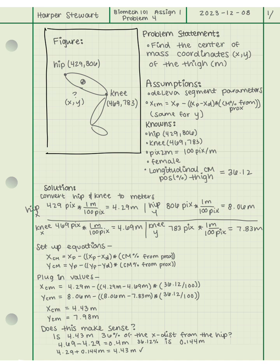Now I'll think through what's happening with my y coordinate. I calculated 7.98 meters, and we can see that 7.98 is closer to 8.06 meters, which is our hip coordinate, than it is to 7.83, which is our knee coordinate. This makes sense because 36% is a smaller portion of 100%, so we'd expect our y coordinate to be closer to the hip than to the knee. So my calculations look correct, and our final answer is: the thigh center of mass is 4.43 meters in the x direction and 7.98 meters in the y direction.